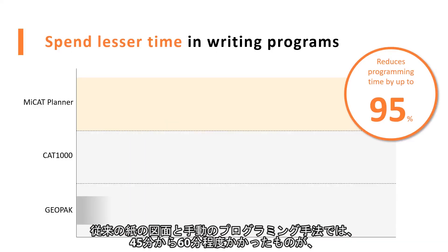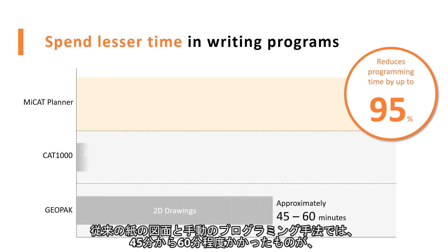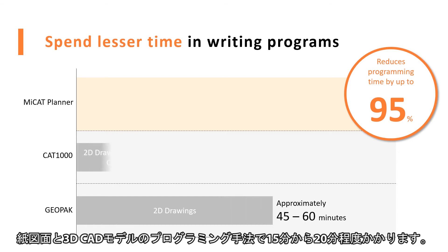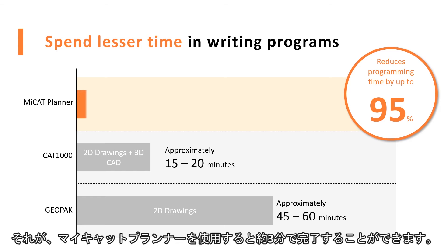What took 45 to 60 minutes with a traditional 2D diagram manual method, and 15 to 20 minutes with a 2D diagram plus 3D CAD method, can now be completed in approximately 3 minutes using MiKit Planner.